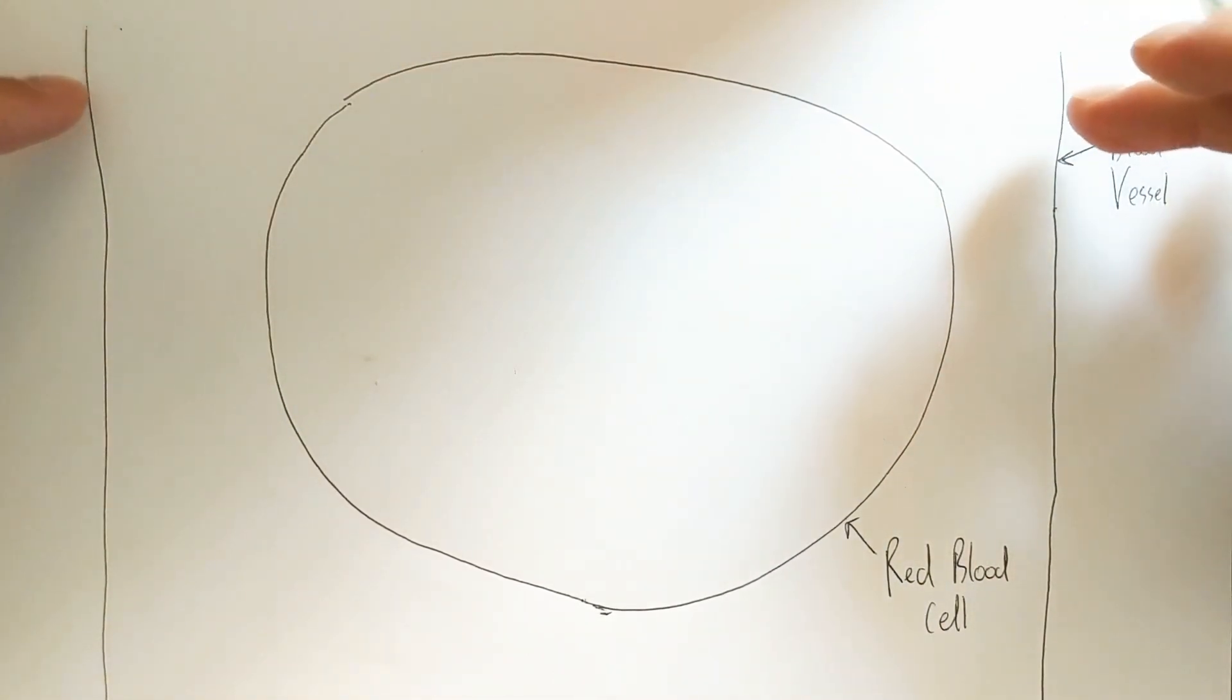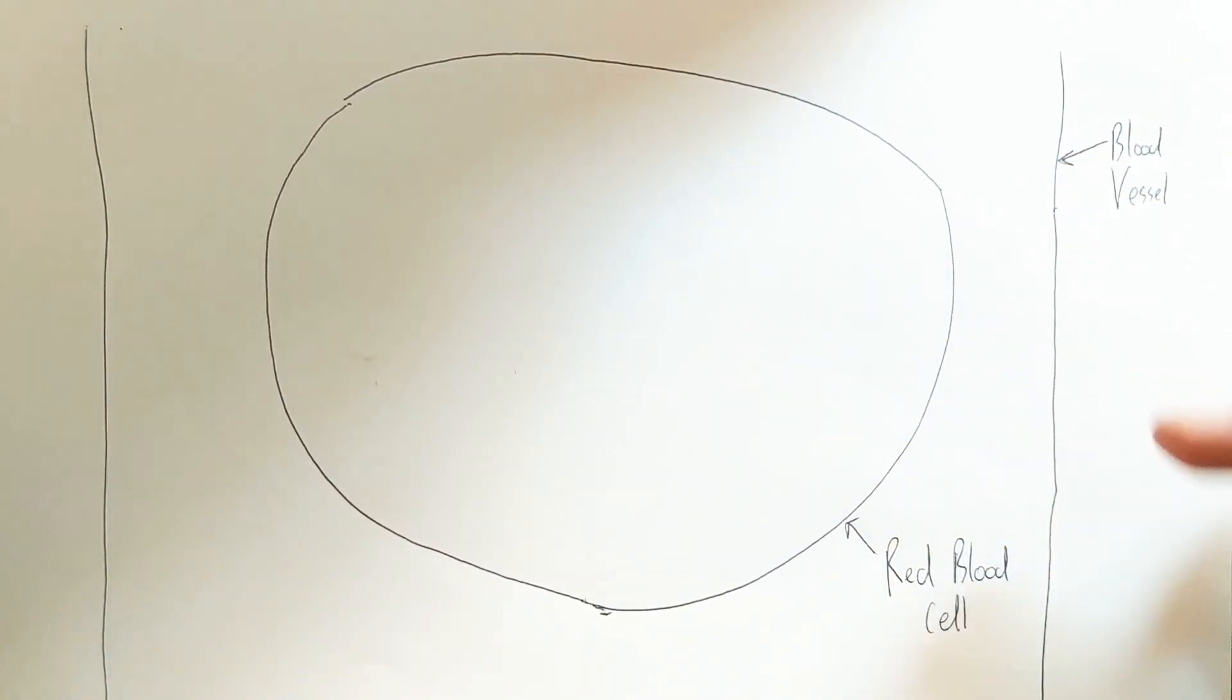So this picture has a blood vessel that's indicated by these lines and within the blood vessel we have a red blood cell.